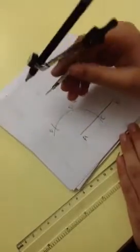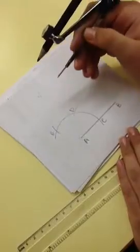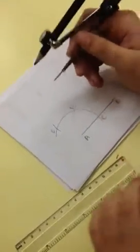Now what we are going to do is we are going to bisect angle EAD which is 60 degrees. We can change the radius here.